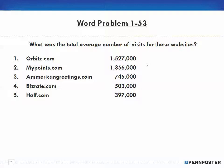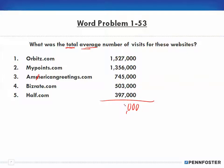Problem 1-53 asks: what was the total average number of visits for these websites — Orbitz, MyPoints, American Greetings, and others. There's a mistake in the slide, but don't mind that. So first I have to find the total, then find the average. I noticed these numbers all end in zeros. Doing the long addition: 7 and 6 is 13, plus 5 is 18, plus 3 is 21, plus 7 is 28, carry the 2; 2 and 2 is 4, plus 9 is 13, plus 9 is 22, carry the 2.